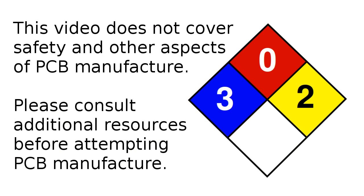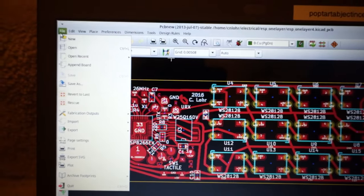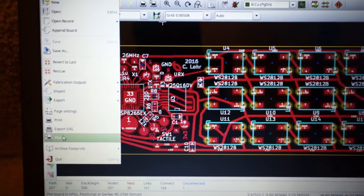In this video I use ferric chloride and potassium hydroxide, and I do not go over safety measures necessary when dealing with these chemicals. So please use other resources before attempting PCB manufacture. I found the problems with the board and I corrected them.